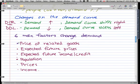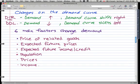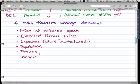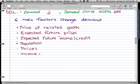Now there are six main factors that change demand. The price of related goods, the expected future prices, expected future income and credit, population, prices and income. And I will talk about each of these briefly.